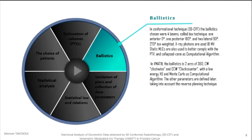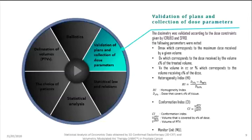The other parameters are defined taking into account the reverse planning technique. At the end of each dosimetry, verification of the validation criteria was established for each technique — in other words, a good distribution of the dose on the target volume while sparing the organs at risk. This treatment planning was established on the Monaco planning system of the company Elekta, and the dosimetry was validated according to the dose constraints given by ICRU-83 and SFRO.